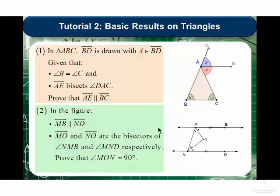In problem 2, we're given a figure where the ray MB and the ray ND are parallel. Furthermore, we have that line segments MO and NO are the bisectors of angles NMB and MND, respectively. So you can see bisectors of the angle means that we have two equal angles there, generated by this line segment MO.